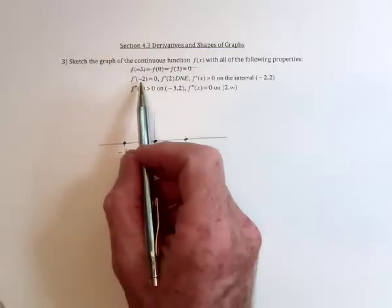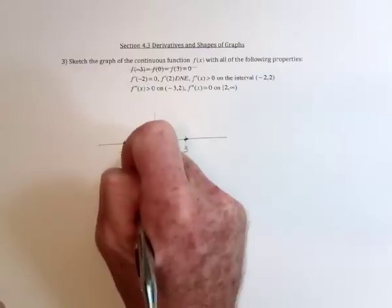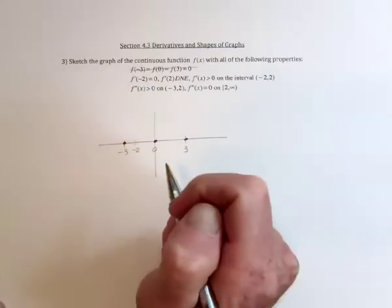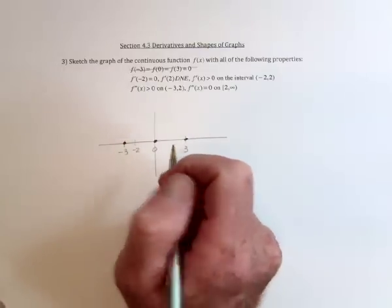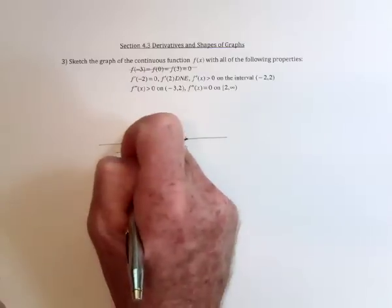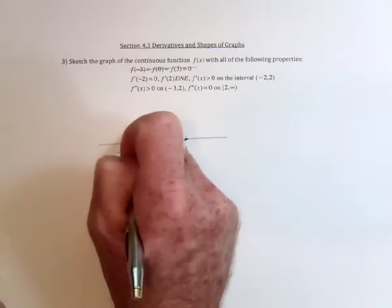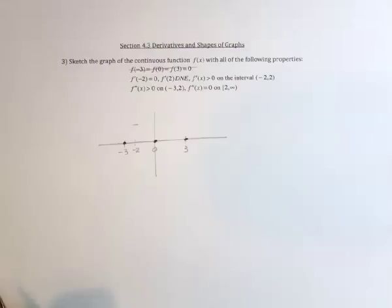Next, at negative 2, the derivative equals 0. So at negative 2, it doesn't say what the y value is, but the derivative equals 0. So I'll just put it up here. Derivative equals 0 means that it's got a horizontal tangent line. So I'll just represent that with a little tiny horizontal tangent line right there.